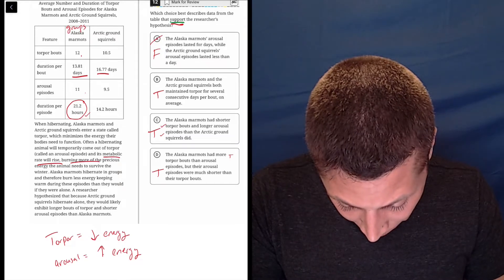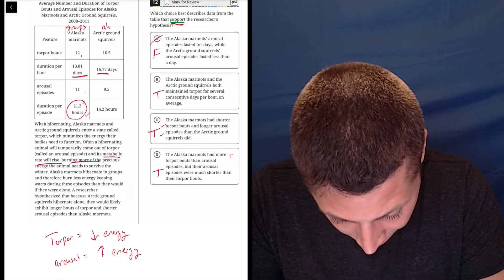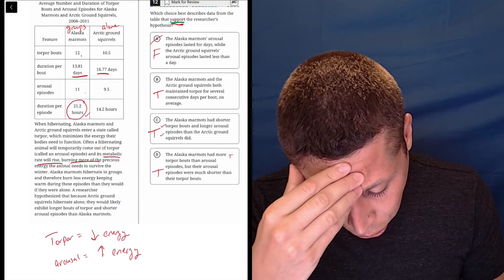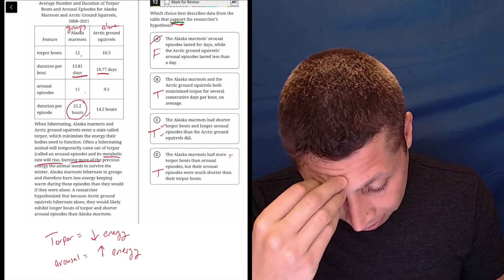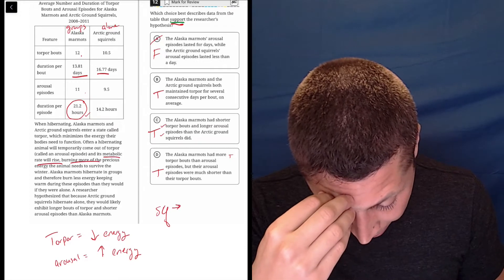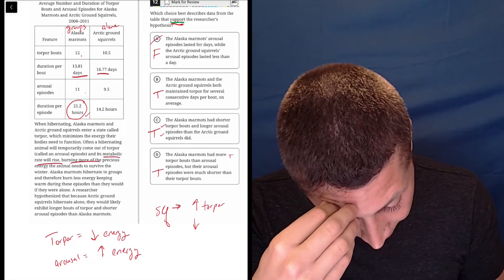A researcher hypothesized that because arctic ground squirrels hibernate alone, they would likely exhibit longer bouts of torpor and shorter arousal episodes than Alaska marmots. So they're saying the squirrel has more torpor and less arousal.